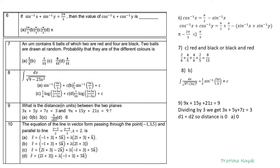Question 10: the equation of the line in vector form passing through the point (−1, 3, 5) and parallel to the line (x−3)/2 = (y−4)/3, z = 2. The position vector is −i + 3j + 5k. The direction vector has components 2, 3, and 0 for z. So R = (−i + 3j + 5k) + λ(2i + 3j). The answer is B.